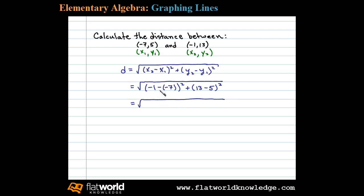Inside this first parentheses we have consecutive negatives, negative 1 minus negative 7, so we'll rewrite that as negative 1 plus 7, squared. Then simplifying further, we have the square root of negative 1 plus 7 is 6, plus 13 minus 5 is 8.